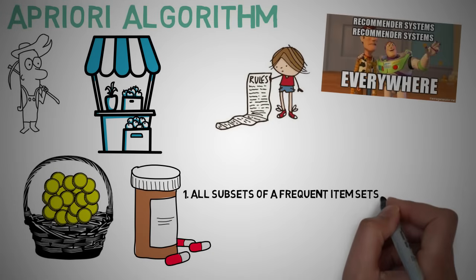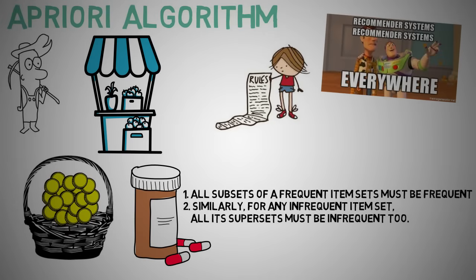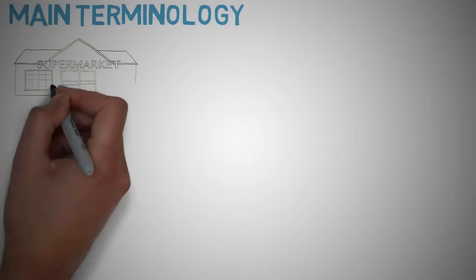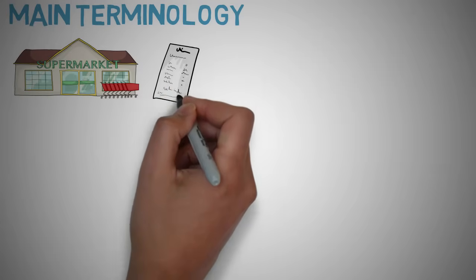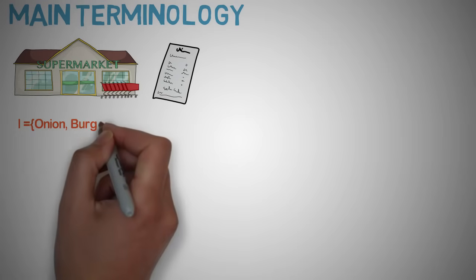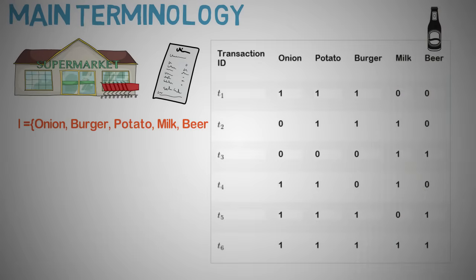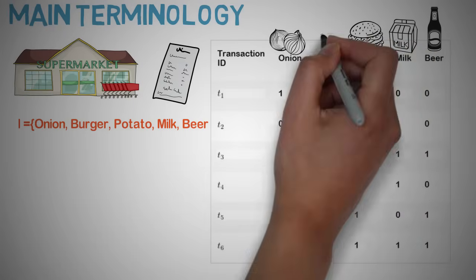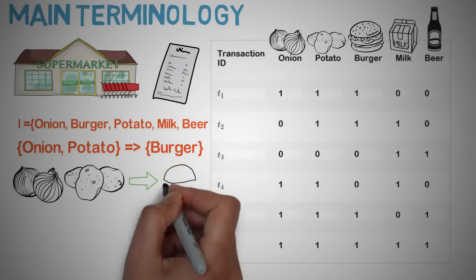A key concept in Apriori is to assume that all subsets of a frequent item set must be frequent, and similarly, for any infrequent item set, all its supersets must be infrequent too. Let's take another easy example from the supermarket sphere. The item set I contains onions, burgers, potatoes, milk, and beer, and a dataset consisting of six transactions. Each transaction is a tuple of zeros and ones, where zero represents the absence of an item and one the presence. An example rule would be onion and potato → burger, meaning that if onion and potatoes are bought, customers also buy a burger.